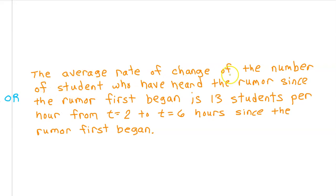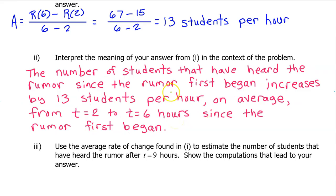You can also say the average rate of change of the number of students who have heard the rumor since the rumor first began is 13 students per hour from t equals 2 to t equals 6 hours since the rumor first began. A lot of students prefer this method of interpretation because it flows so directly from part 1. In part 1, we found that the average rate of change is 13 students per hour. So for this interpretation, you basically just restate that the average rate of change is 13 students per hour. But you just include the average rate of change of what? And you include the time interval used to calculate the average rate of change. But I think it's more meaningful to describe the average rate of change as how fast some quantity is increasing or decreasing.